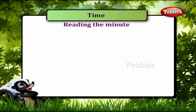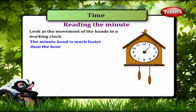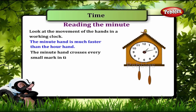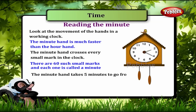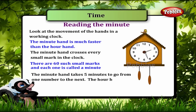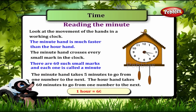Reading the minute. Look at the movement of the hands in a working clock. The minute hand is much faster than the hour hand. The minute hand crosses every small mark in the clock. There are 60 such small marks and each one is called a minute. The minute hand takes 5 minutes to go from one number to the next. The hour hand takes 60 minutes to go from one number to the next. So one hour is equal to 60 minutes.